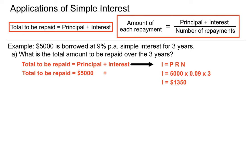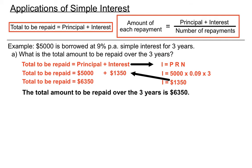So the total to be repaid is the $5,000 principal plus the $1,350 interest, giving a final total of $6,350. Answering in sentence form: the total amount to be repaid over the three years is $6,350. That uses the first principle — total to be repaid equals principal plus interest.